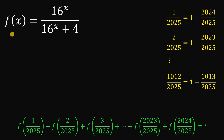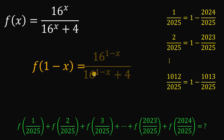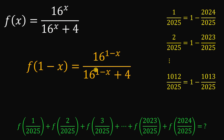At this point we have the function f of x, so let's find f of 1 minus x. To get the value of f of 1 minus x, we replace all x with 1 minus x. To simplify, we use the law of exponents: b raised to the power of a minus c can be rewritten as b raised to the power of a over b raised to the power of c.